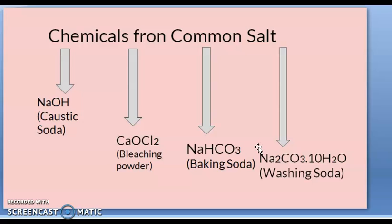CaOCl₂ is bleaching powder, used for bleaching — hair bleach, skin bleach, and bleaching clothes. Baking soda, sodium hydrogen carbonate (NaHCO₃), is used in different dishes: making naan, roti, idlis, cakes, dhokla. It makes food soft and spongy.